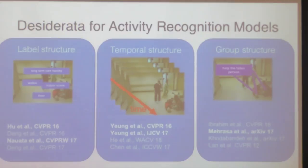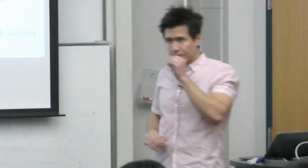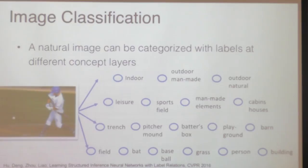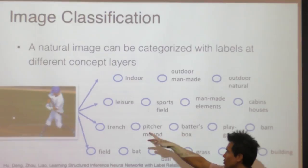Please feel free to interrupt me at any time, especially since there are disconnected components. So, to motivate what we're talking about with label structure: here's an input image, and on the right is a partial set of labels I could potentially put on this image. You can think of each of these as Boolean things — yes or no. Is this an indoor scene? Is it an outdoor man-made scene? Is it a sports field? Is there a trench? Is there a batter's box? I've got all these labels I could potentially put on this scene.